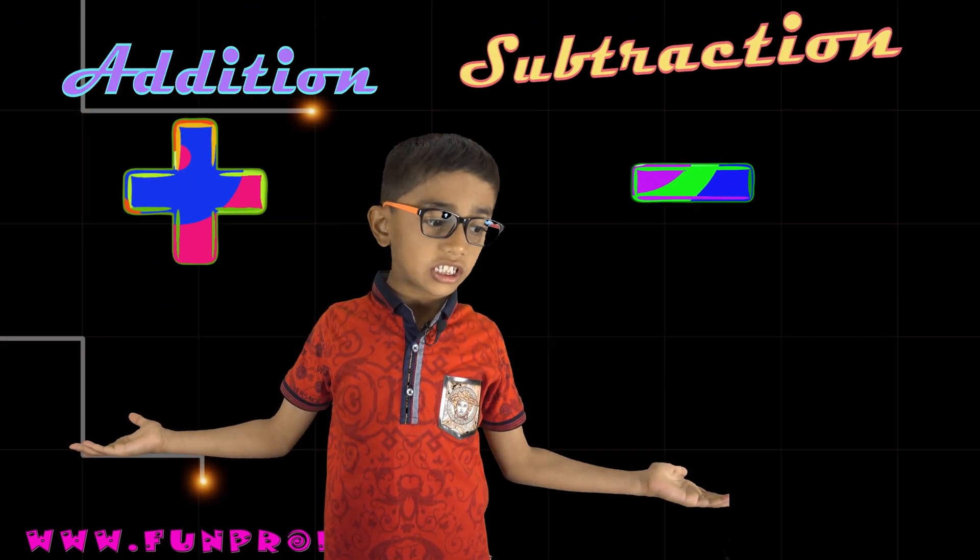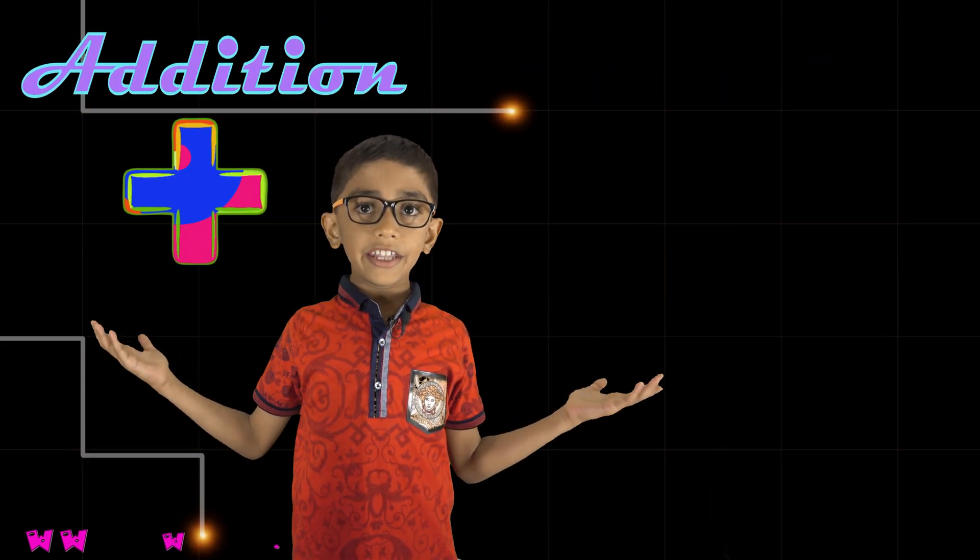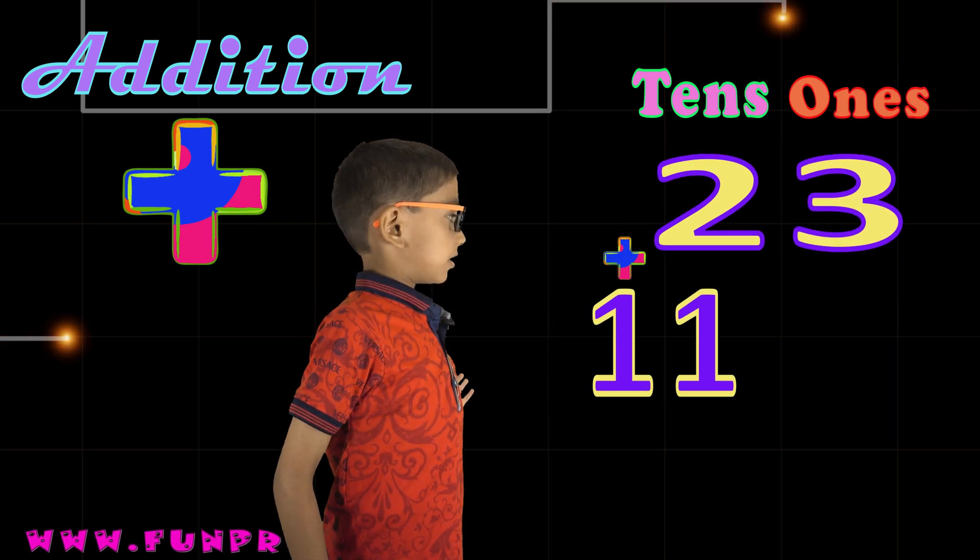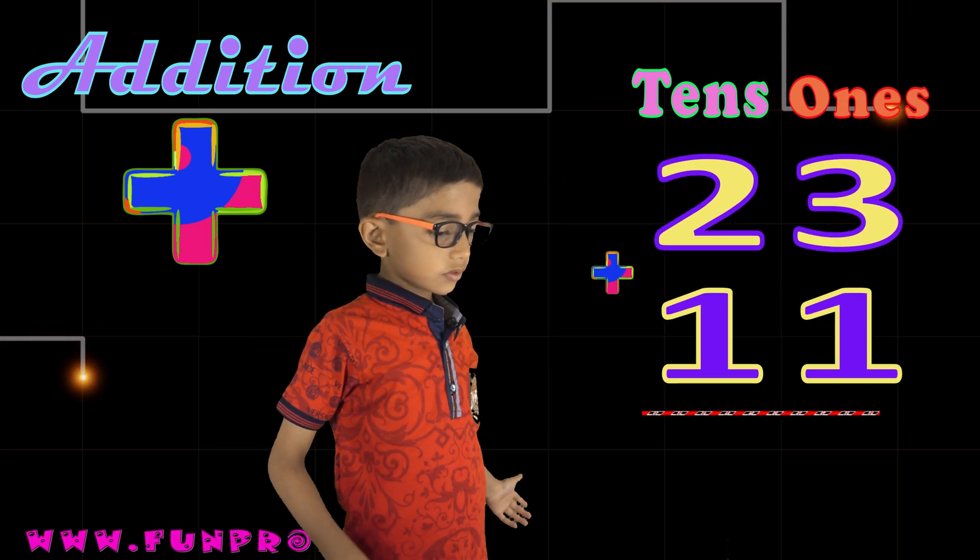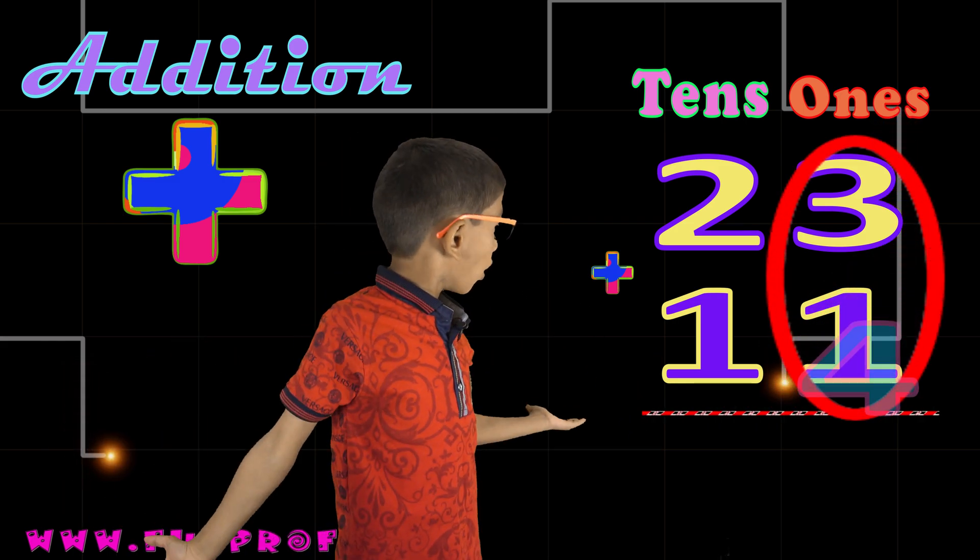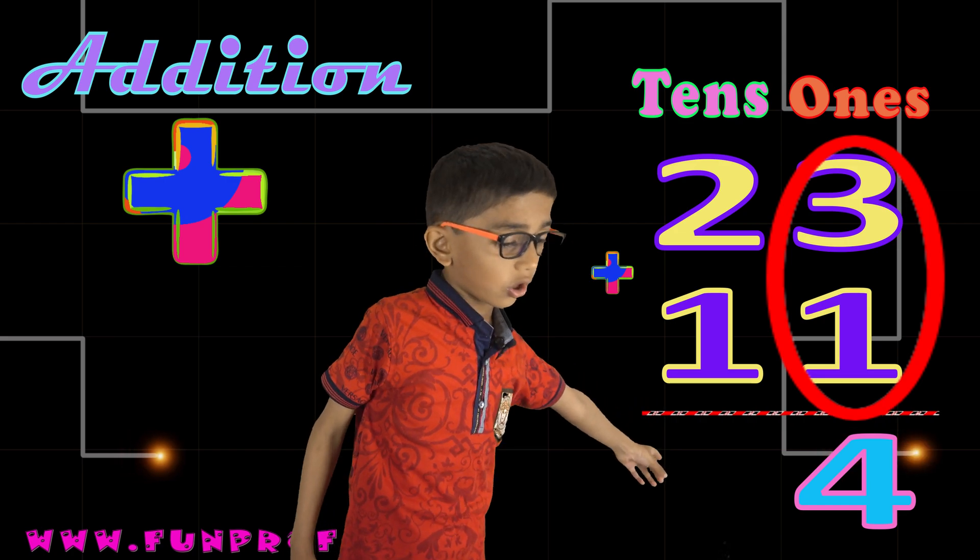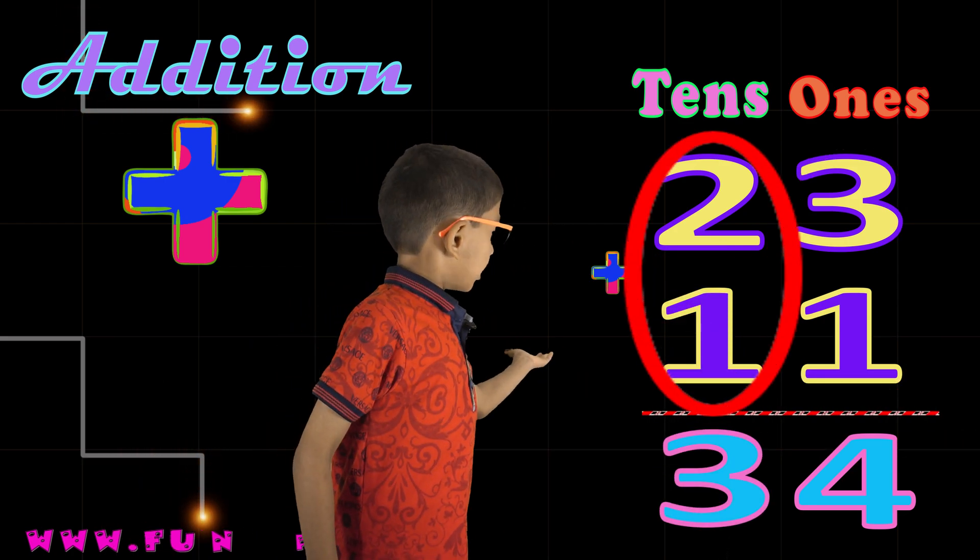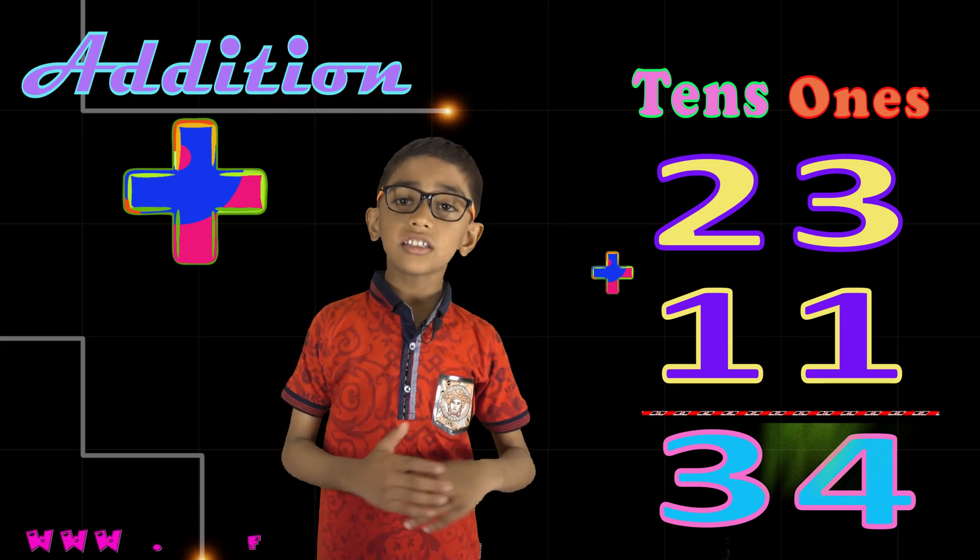Now we will do addition and subtraction. In addition, tens and ones. 23 plus 11. 3 plus 1? 3 plus 1 is equal to 4, so here is 4. And 2 plus 1 is equal to 3. And here is 3. The answer is 34.